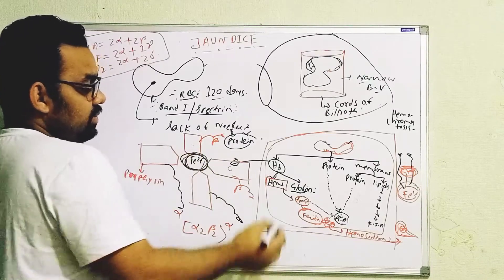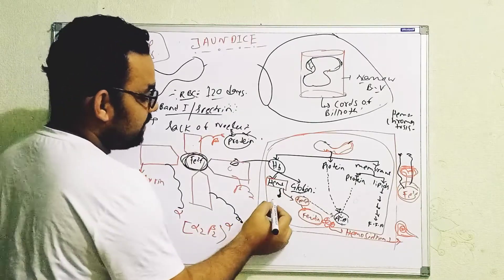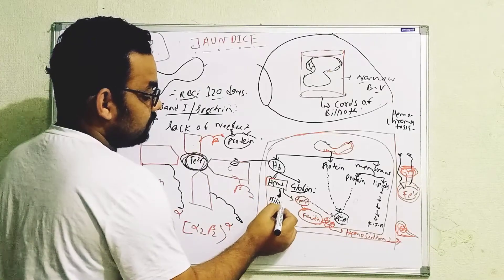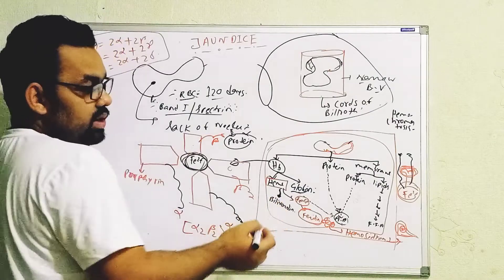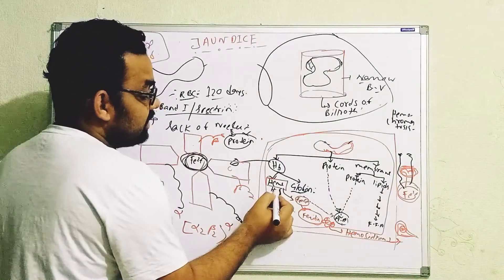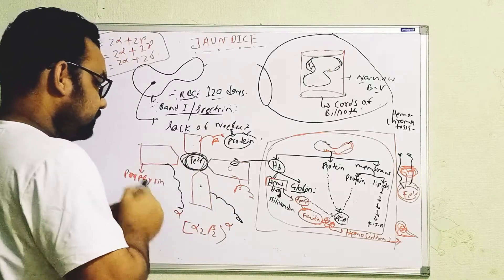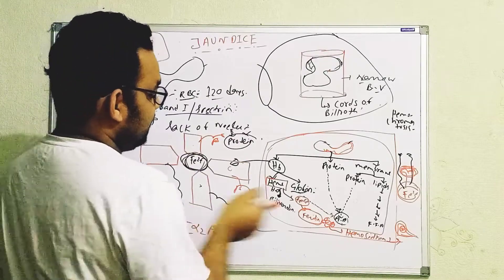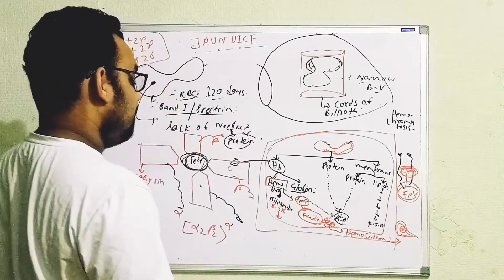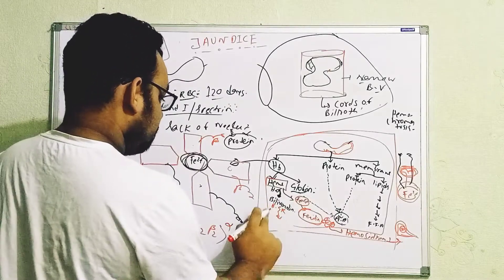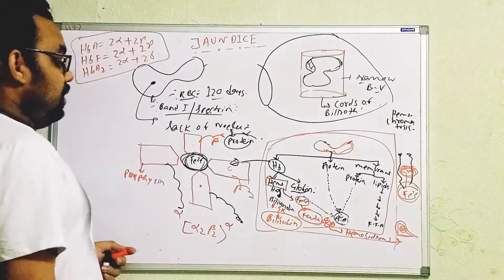From the protoporphyrin ring part of heme, we first get biliverdin. The enzyme heme oxygenase acts here and converts the heme ring into biliverdin. After that, biliverdin is acted upon by another enzyme called biliverdin reductase (BR), which converts biliverdin into bilirubin.